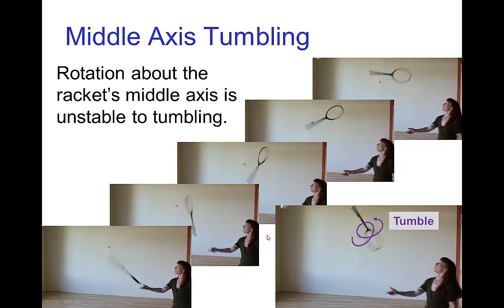And when the racket is thrown that way, it will almost always tumble. So, it's unstable to going into a tumbling motion.